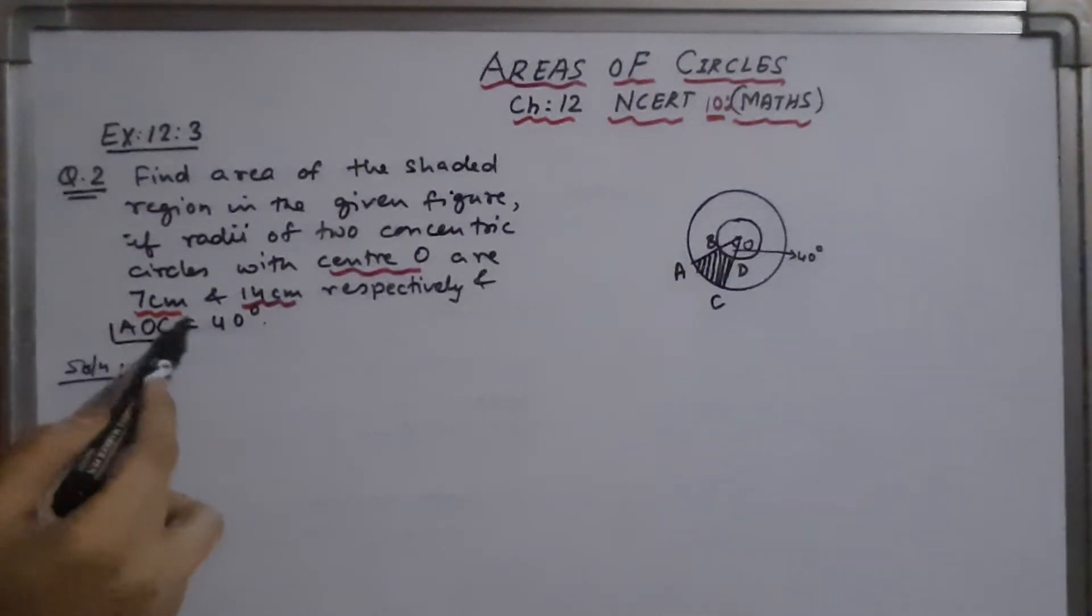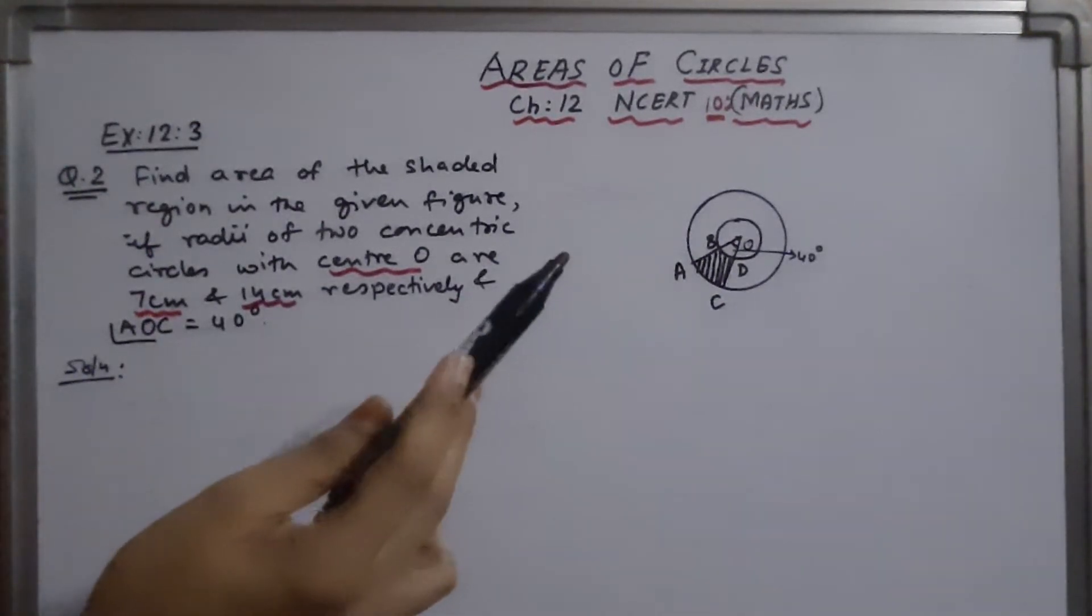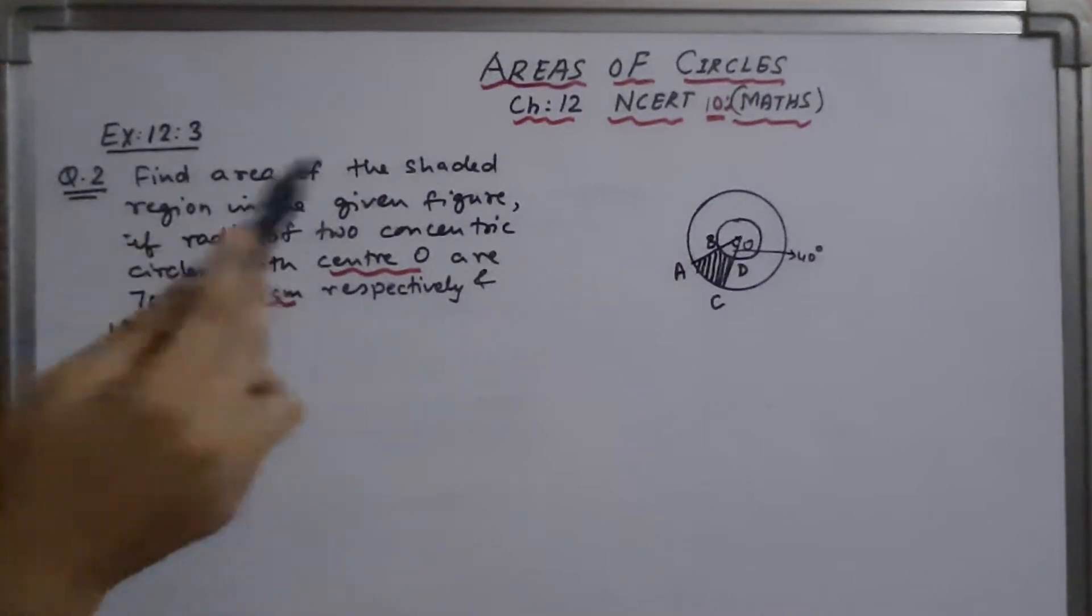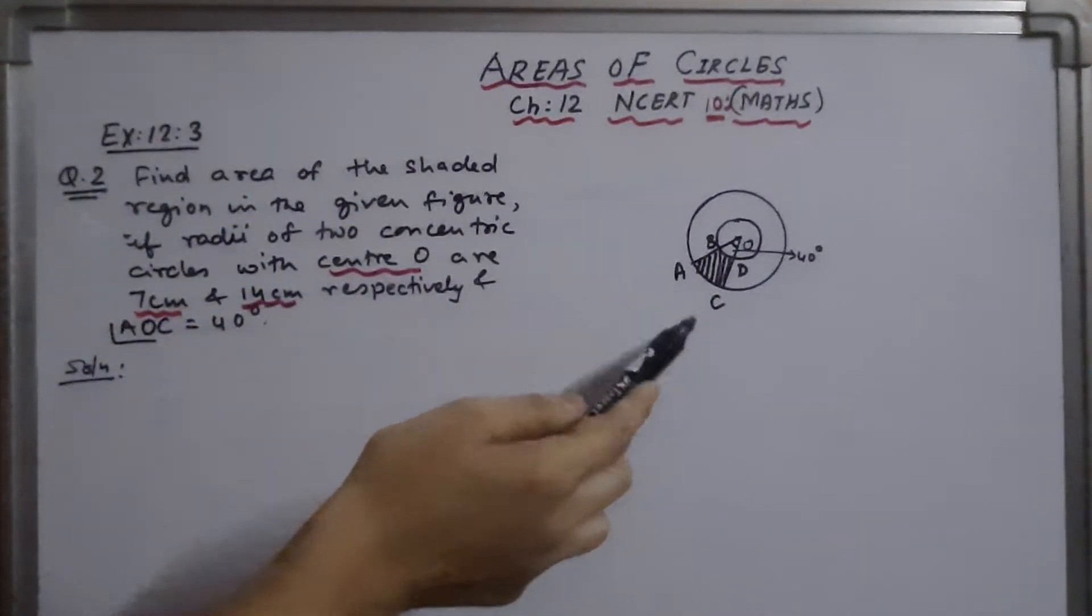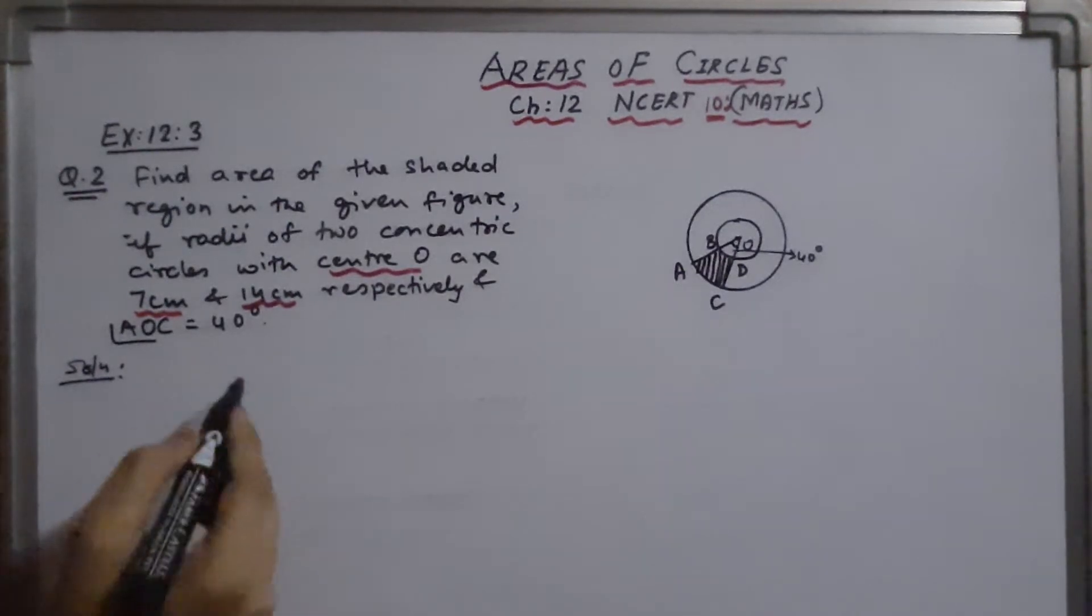We have to find AOC is given 40 degrees and we have to find the shaded region, that is area of ABDC. So first, what is given?